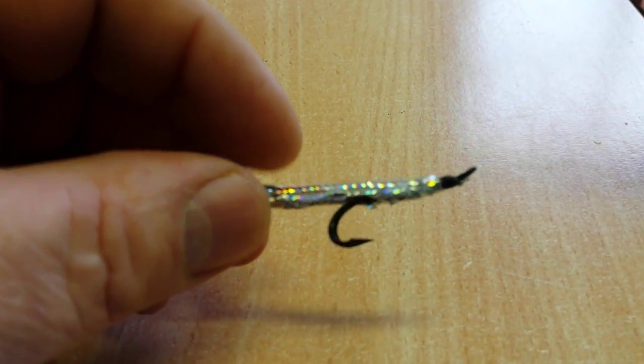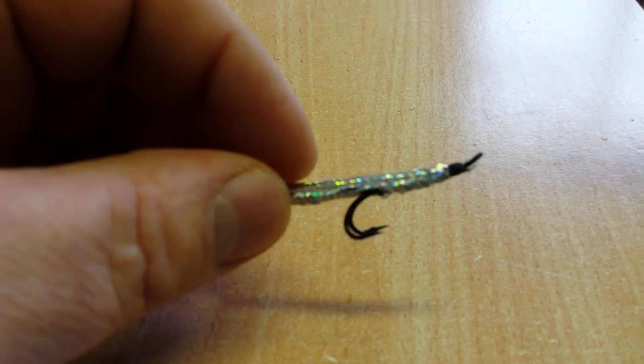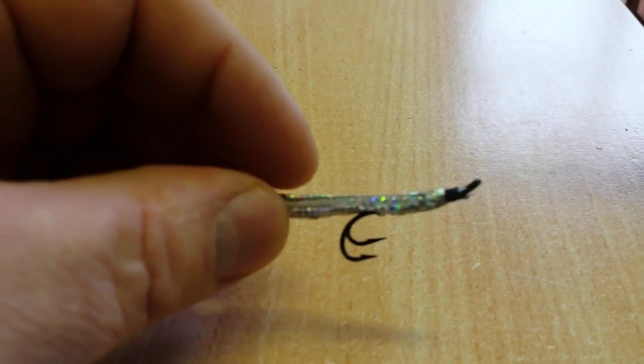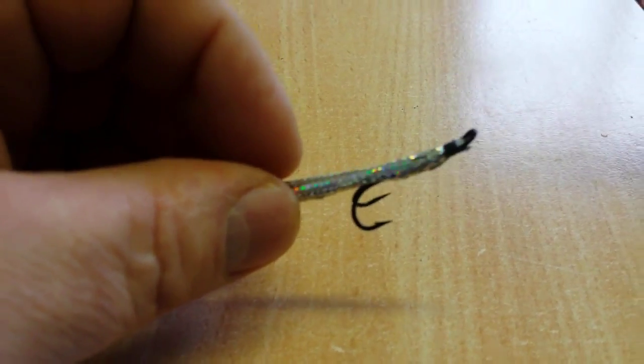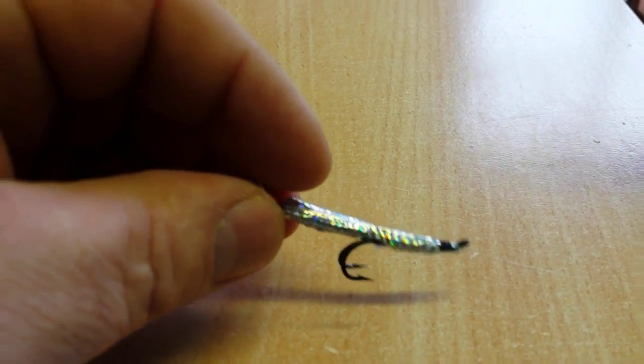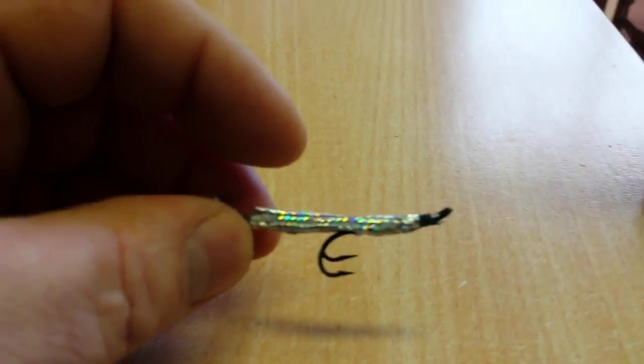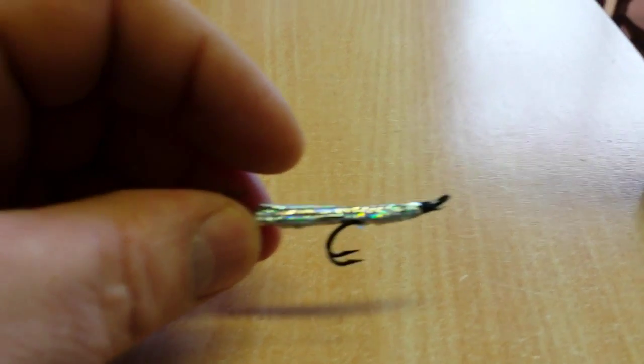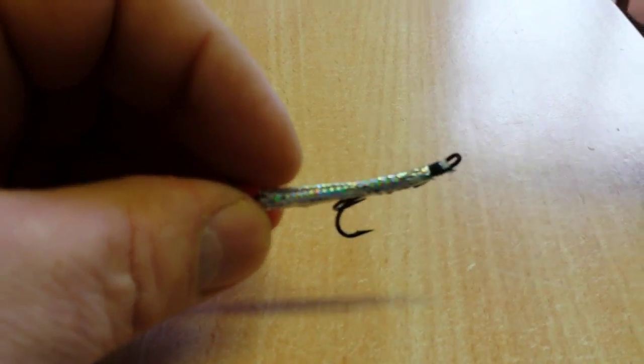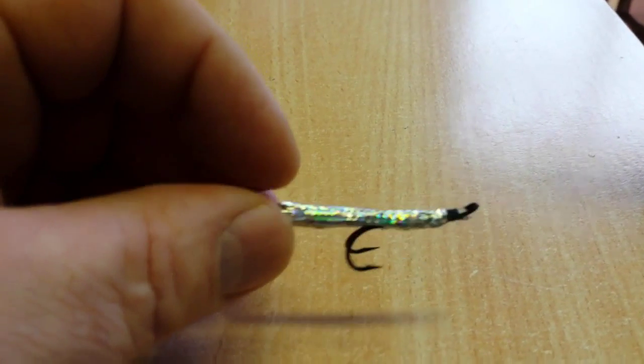Sometimes they'll come up and as you're retrieving very slowly, you'll get a couple of small little tugs. It's a fish looking at it. He's not convinced and he's tipping at it. And the secret is, when you get a little tug, you strip it in as fast as you possibly can. And that triggers a response from the fish that he'll come after it and he'll hammer it. And when they take like that, they take it solid.